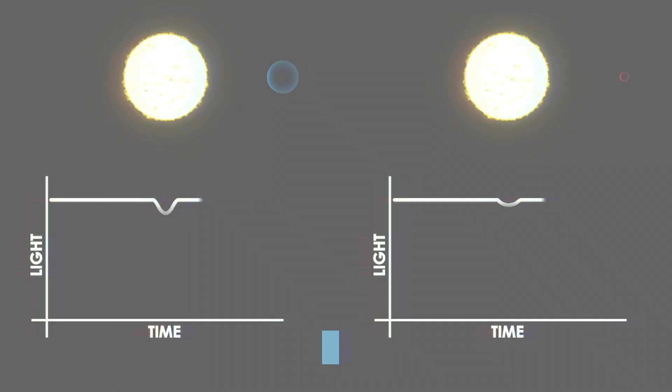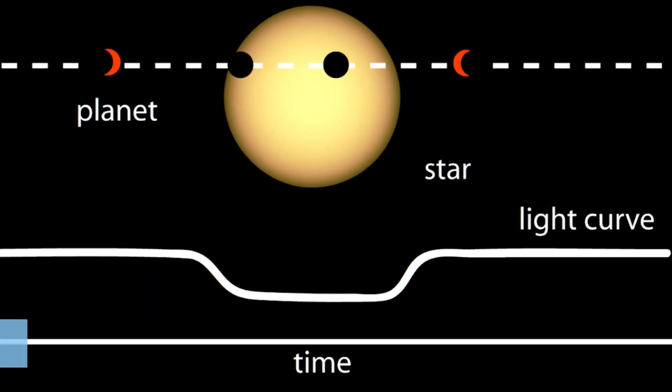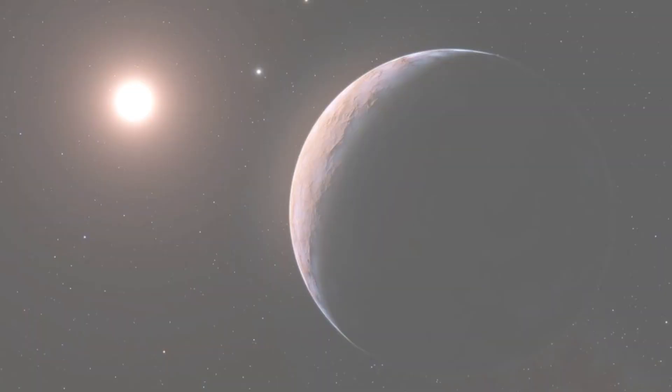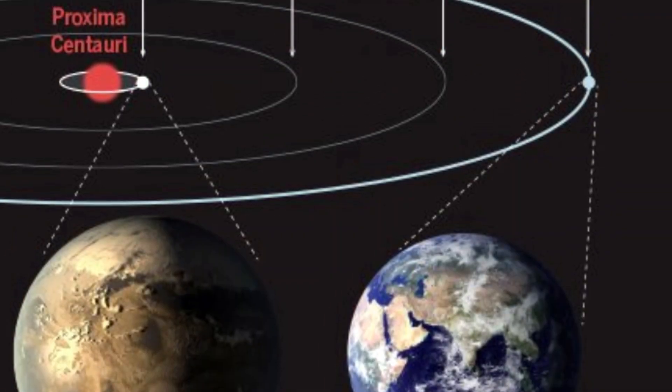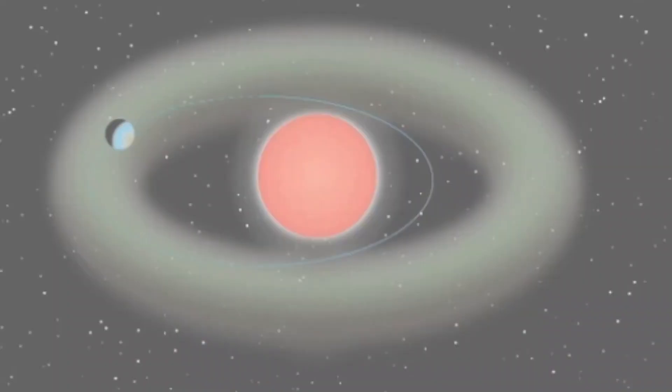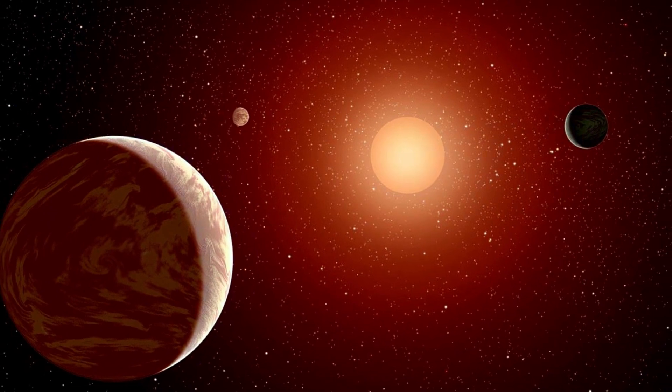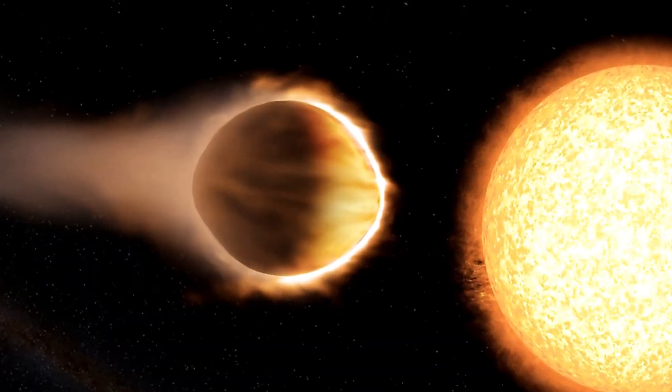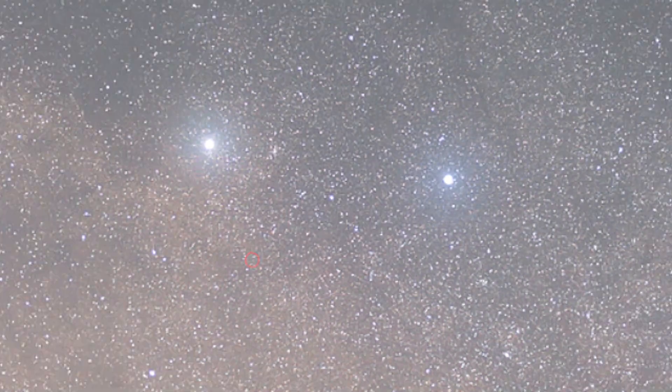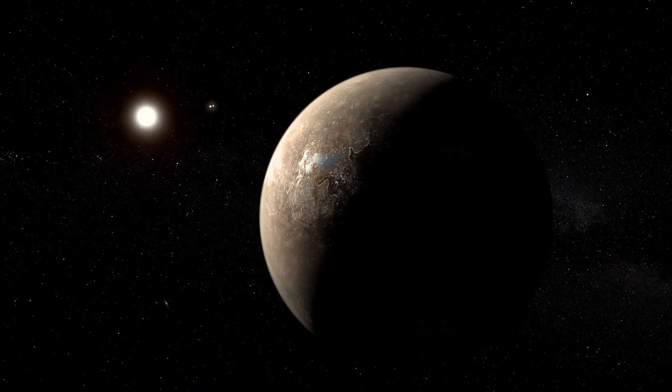The exoplanet is approximately 1.3 times the mass of Earth and orbits its star every 11.2 days. Its distance from Earth is approximately 4.2 light years, which may sound relatively close, but it is still an enormous distance that would take centuries to travel with our current technology. Despite its size and location within the habitable zone, Proxima b is not necessarily a hospitable place for life. The planet is bombarded with high levels of radiation and is likely tidally locked, meaning that one side of the planet always faces its star while the other side remains in perpetual darkness.